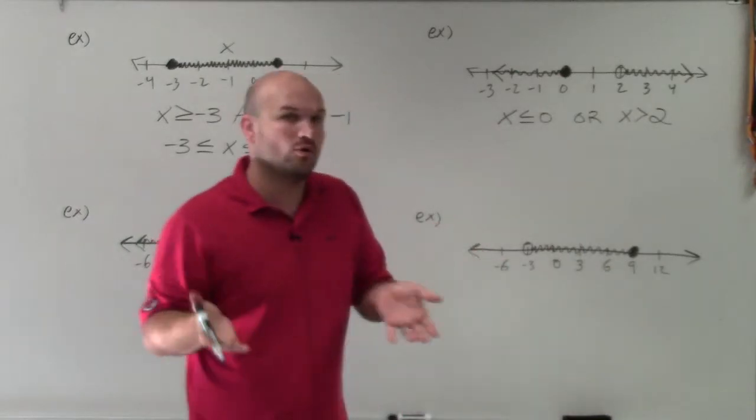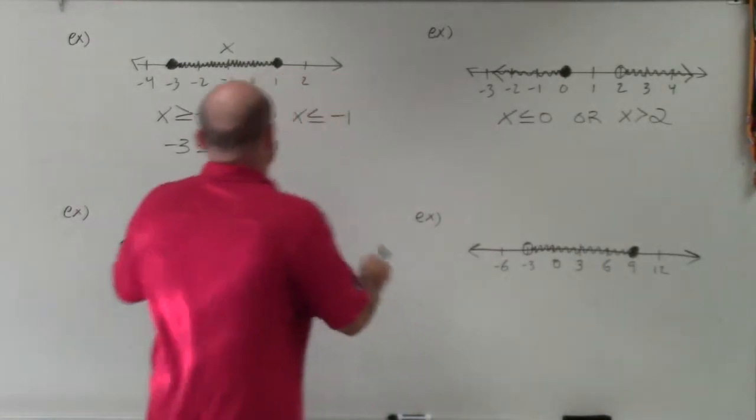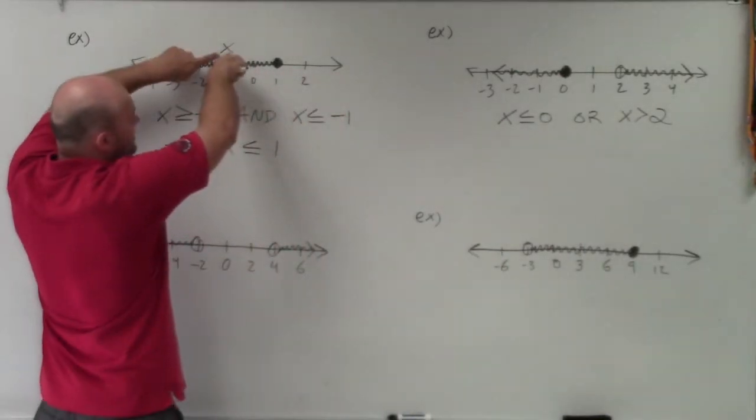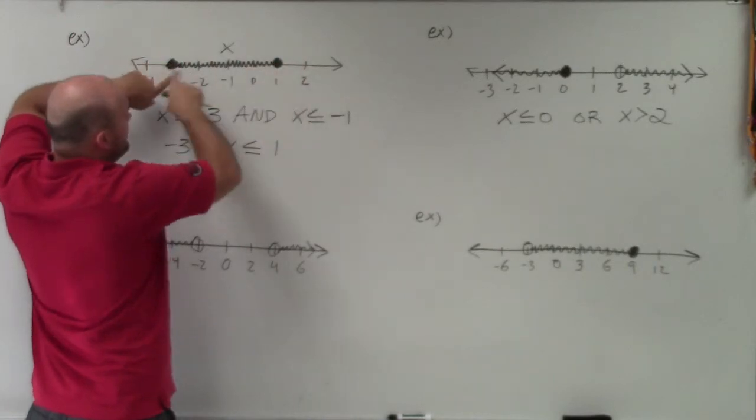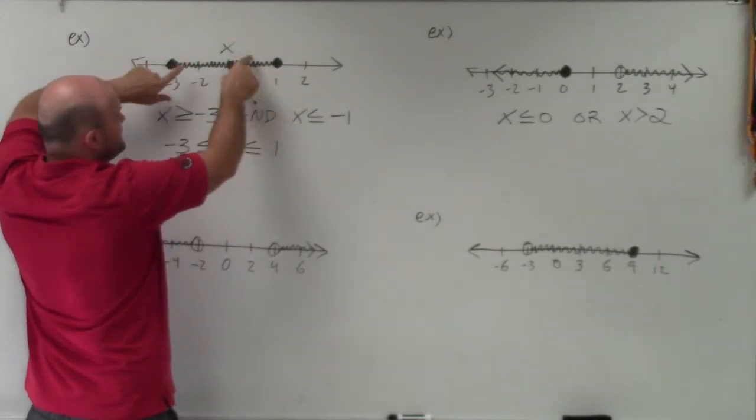Now again, the reason why it's or not and, is because and, it has to be true for both of them. You can see here my x is true for it's greater than negative 3, and it's less than negative 1.